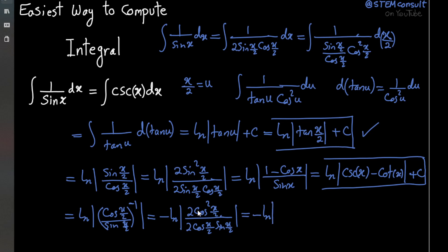So negative ln. Numerator becomes 1 over 1 plus cosine. And denominator becomes just sine. Same idea as before.